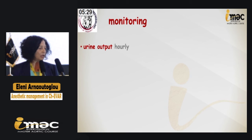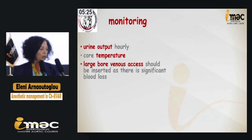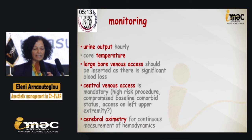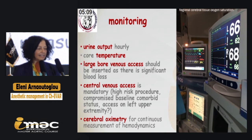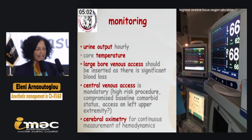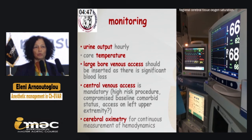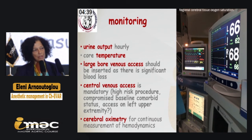We also measure urine output hourly. We insert two large-bore venous accesses and central venous access — this is mandatory for us as we are talking about a high-risk procedure. We use cerebral oximetry in all our patients, because we want to detect not only embolic events, which are very common in this kind of procedure and may compromise cerebral function, but also use this monitoring for continuous hemodynamic measurement — especially when both upper extremities are employed and we cannot measure arterial pressure. With this monitoring, we obtain an indirect measurement of cardiac output, arterial pressure, and hemoglobin.